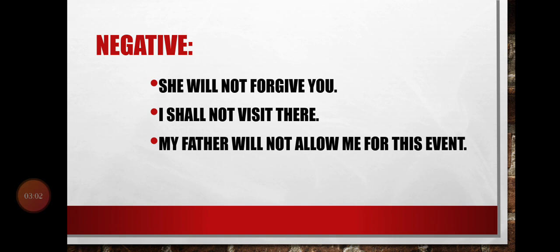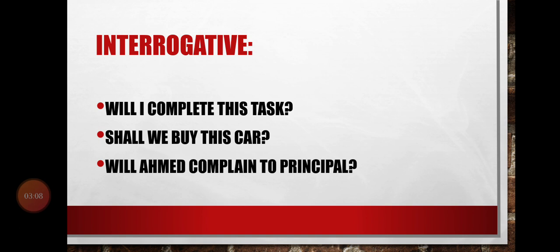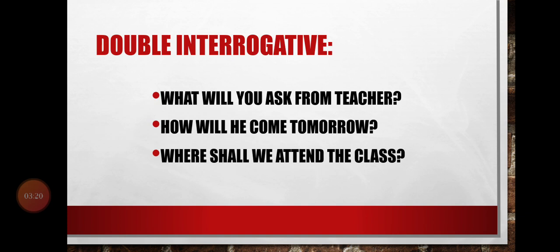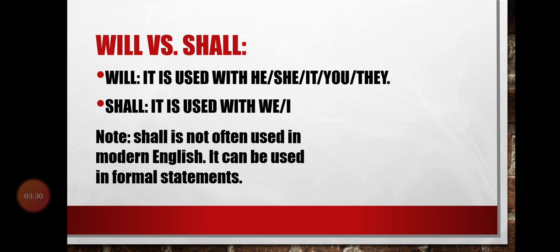For negative examples: 'She will not forgive you.' 'I shall not visit there.' 'My father will not allow me for this event.' We simply add 'not.' For interrogative: 'Will I complete this task?' 'Shall we buy this car?' For double interrogative: 'What will you ask from teachers?' 'How will he come tomorrow?' 'Where shall we attend the class?'